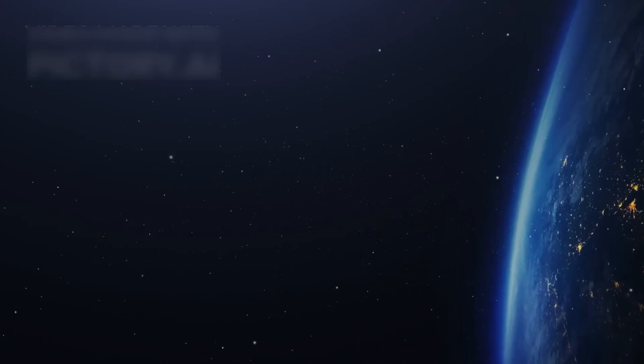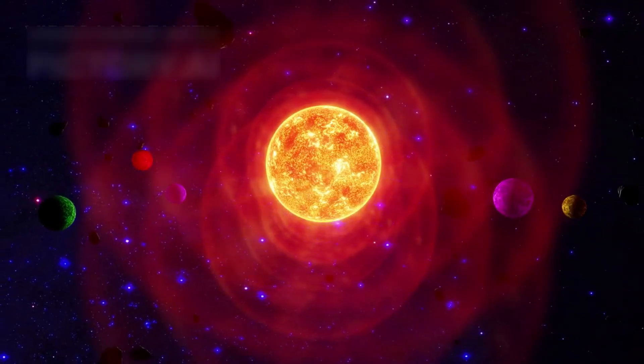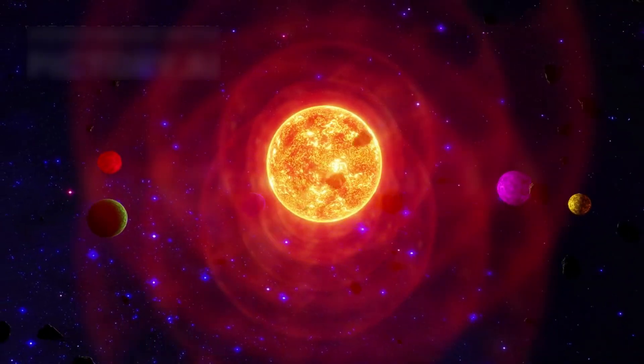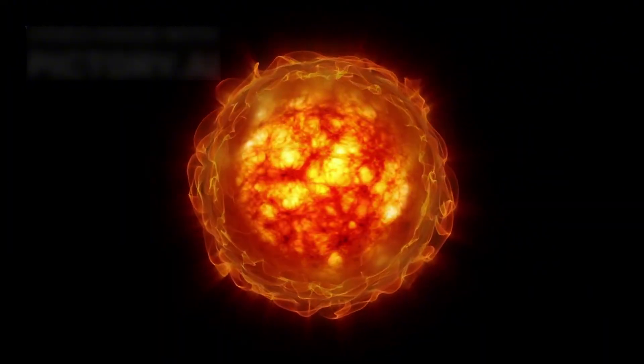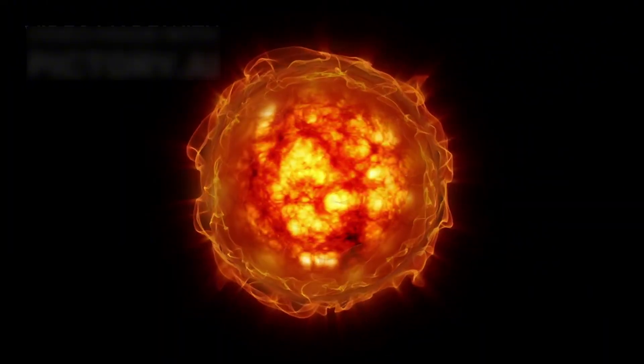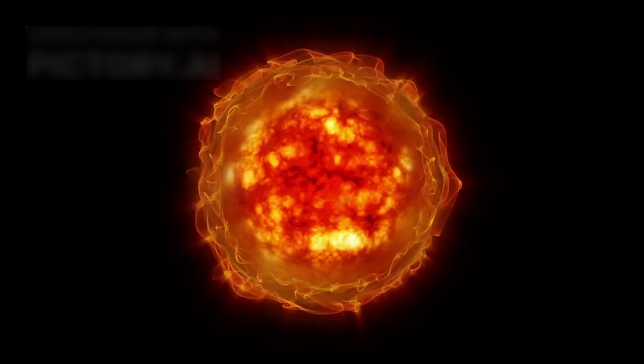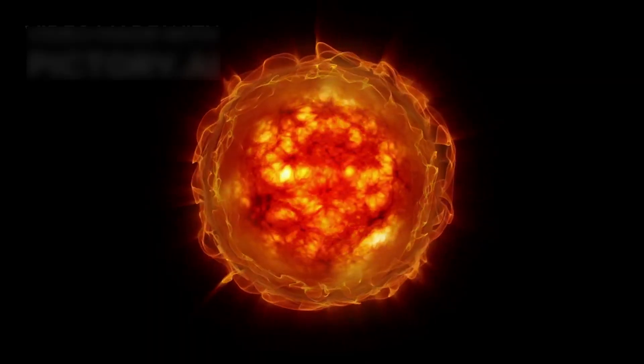Moons were geologically active. Distant planets had atmospheres. The edges of the solar system were far more dynamic than imagined. Even the heliosphere, the protective bubble formed by the sun, was completely misunderstood until Voyager's data showed otherwise.